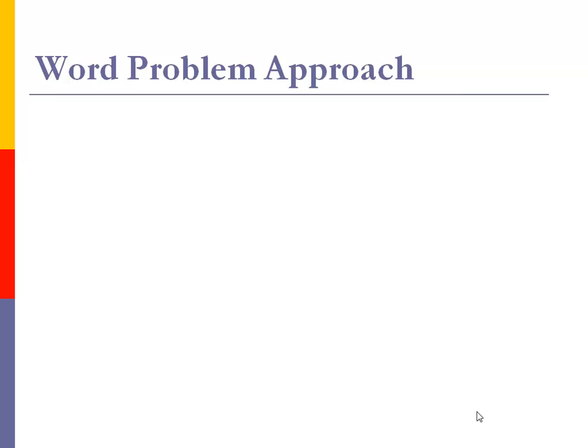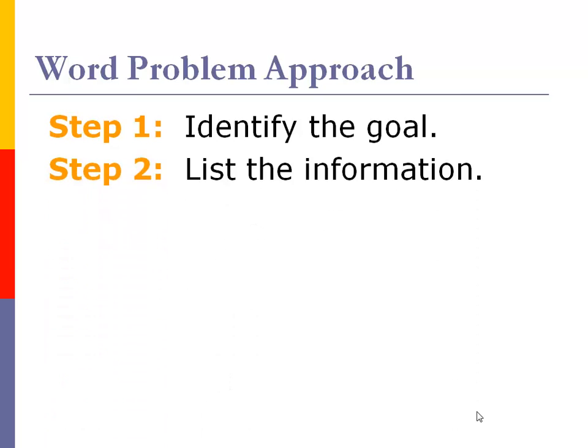Now when I'm doing word problems, I know the dreaded word problem situation, I've got a basic approach. This approach is pretty standard. You can see variations in textbooks all across the country. One of the first things I'd like to do is identify the goal. I like to figure out what I'm trying to find. Then my second step is list the information.